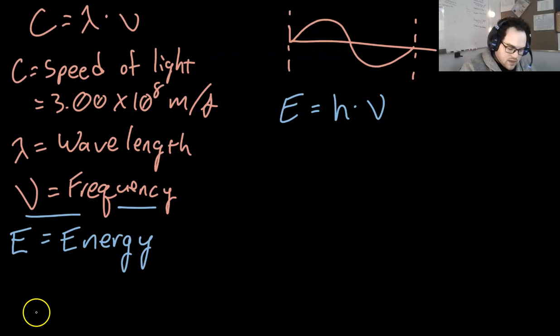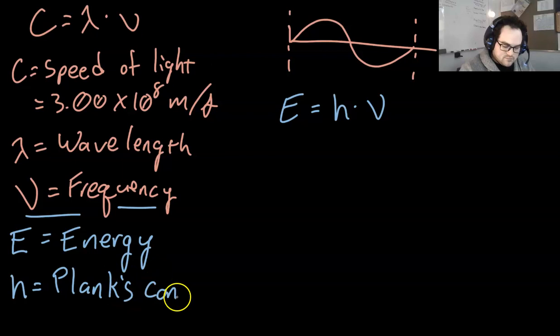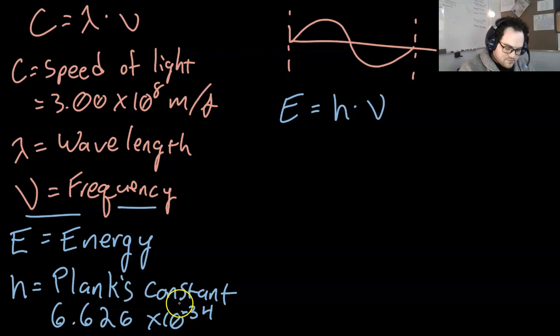And H is Planck's constant. Make sure I spell this guy's name right. Name's not actually written on here, so I'm just going to wing it. And that is 6.626 times 10 to the negative 34th.